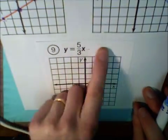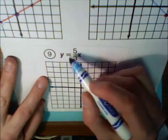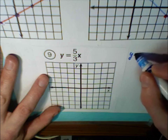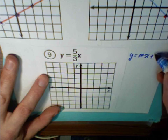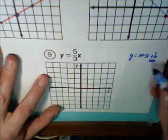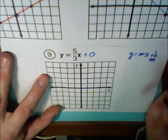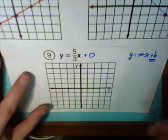Lastly, what happens if we don't have a y-intercept? y equals 5/3x doesn't look like it's in the form y equals mx plus b. But it really is. What exactly is being added? We're actually adding 0.